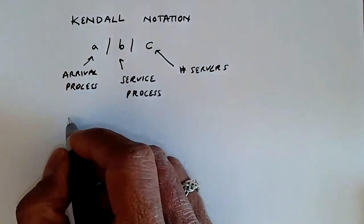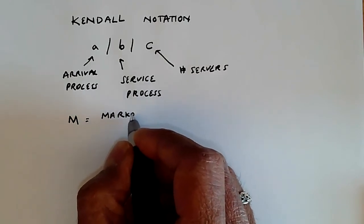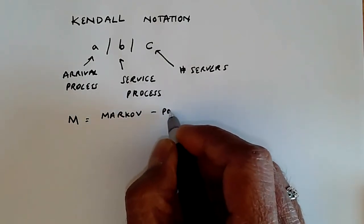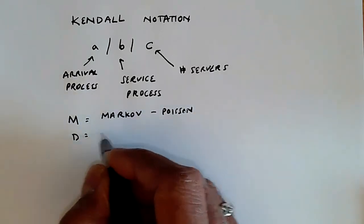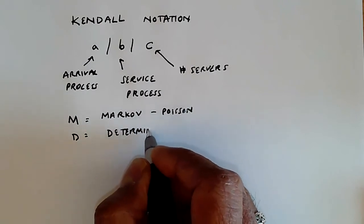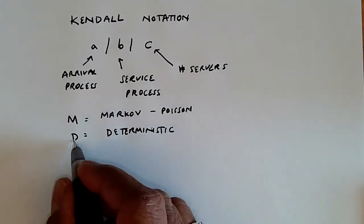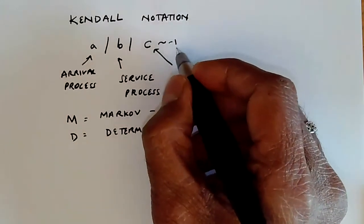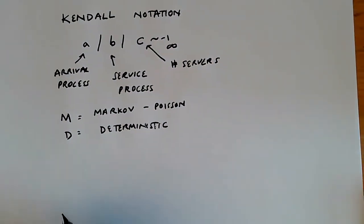For example, the M stands for Markov, meaning an arrival process which is a Poisson arrival process. D stands for deterministic, and so on. Typically the number of servers is going to be one, but it could also be infinite, which means you have an infinite number of servers, and we'll discuss what that means later on.